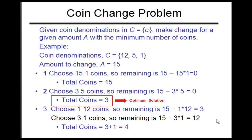The coin changing problem requires that you have a certain amount — say fifteen dollars worth of coins — and you have to make change for it, dividing the change in such a way that you use the least number of coins. For example, the coin denominations given are 12, 5, and 1, and the amount to change is fifteen dollars.